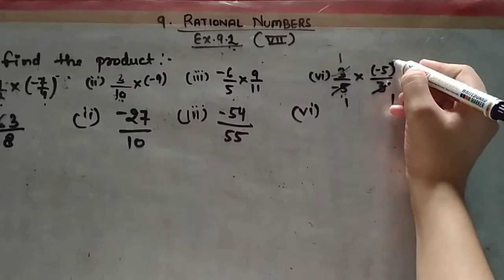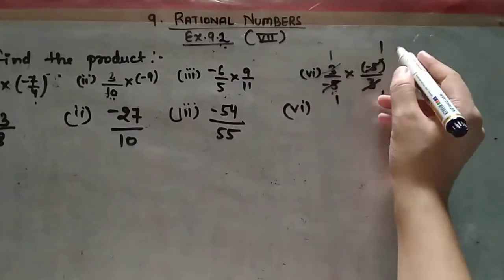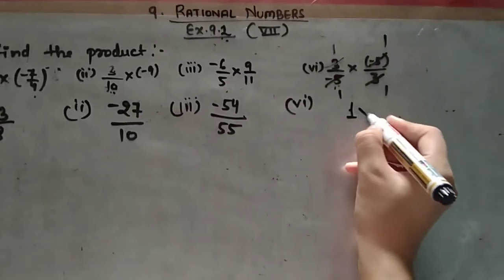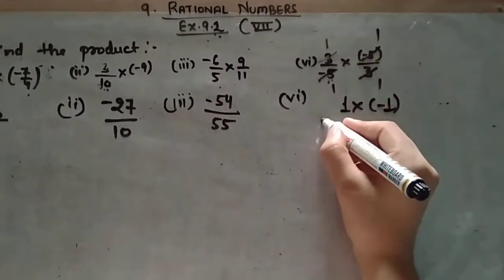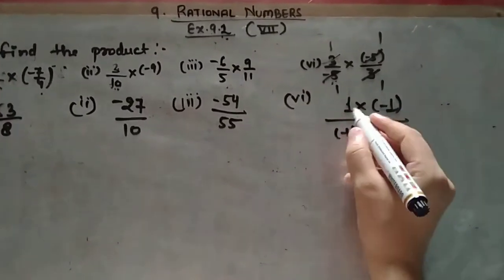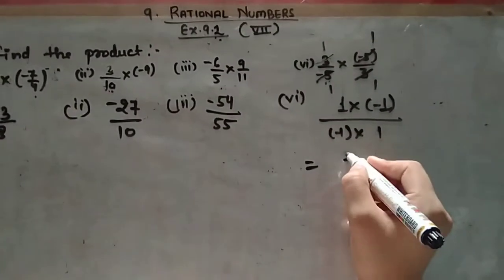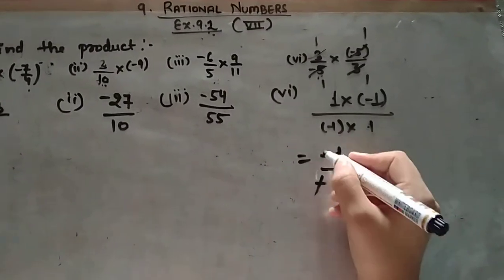Now what remains? 1 multiplied by 1 in the numerator, and there's a negative sign. In the denominator, 1 multiplied by 1, also with negative. So we have 1 upon 1 with negative sign, and 1 upon 1 with negative sign. The negatives cancel, and the answer is 1.